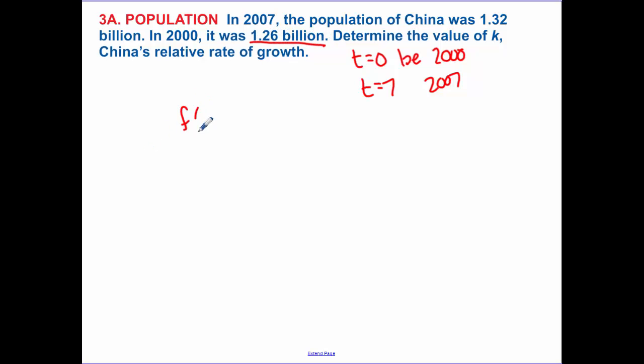So plugging in, we know my initial amount is 1.26e^(kt). It's a rate of growth, so it's kt. I need to solve for k. They tell me that in 2007 I was 1.32 amount of people, 1.26e. I'm looking for k, and this was after 7 years.